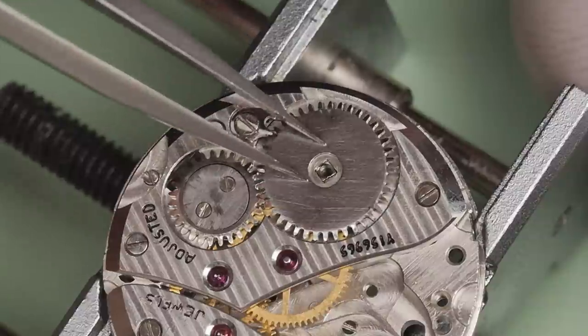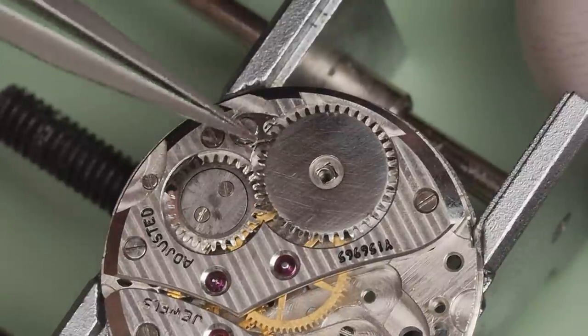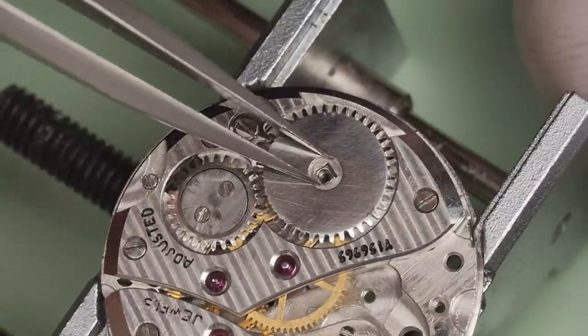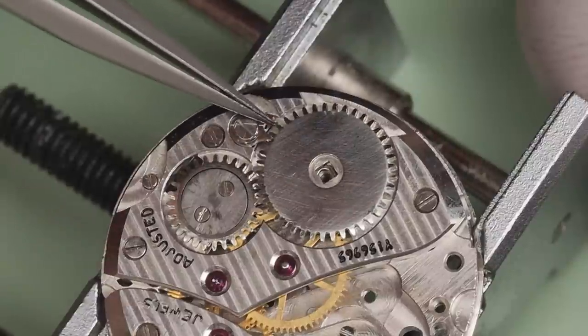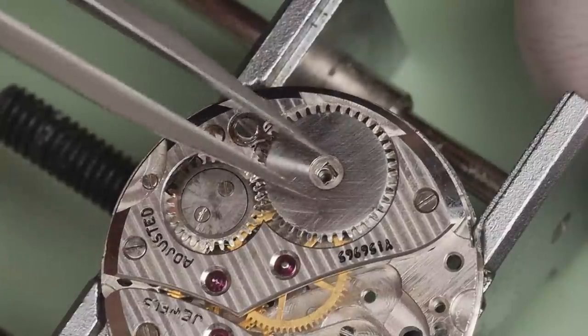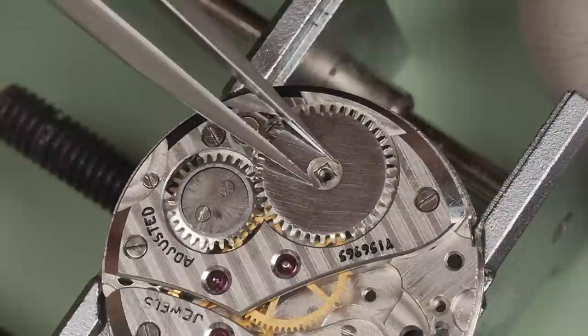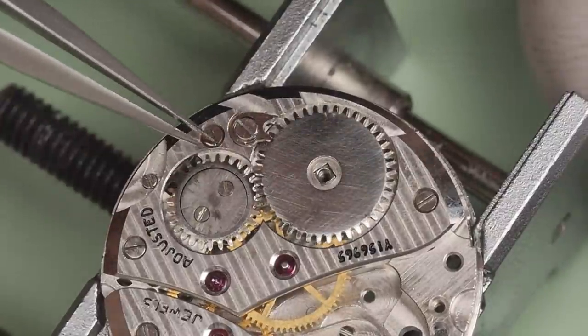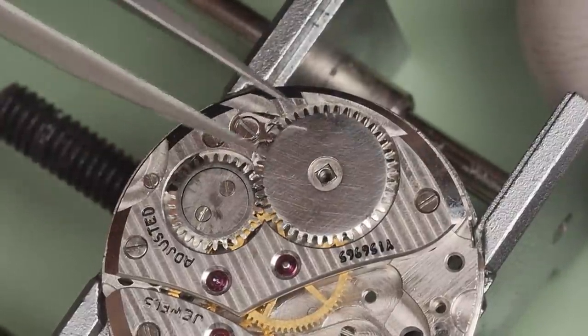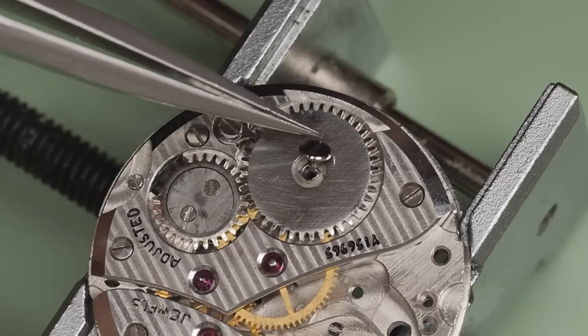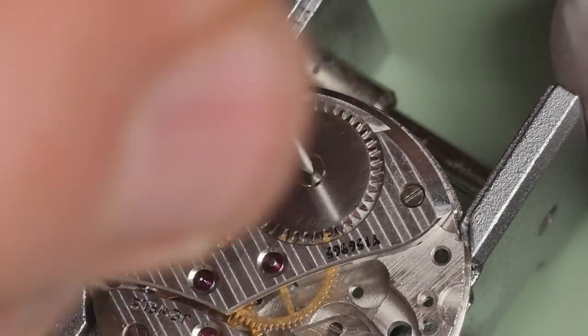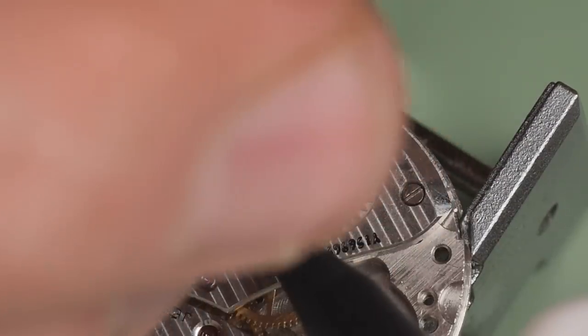Now for the ratchet wheel. This wheel needs to line up with the square sides of the barrel arbor and the teeth need to mesh with the click and the crown wheel. Every watch has its own personality. This watch seems to have a bit of an ornery personality and straightforward component installs aren't as straightforward as they should be. The ratchet wheel screw is tightened down with the help from a pick to hold the wheel steady.